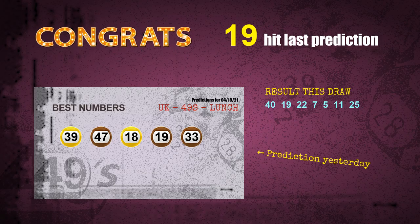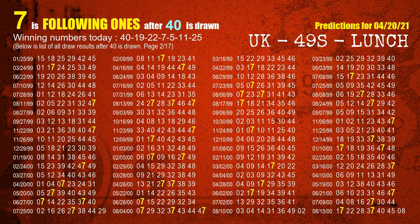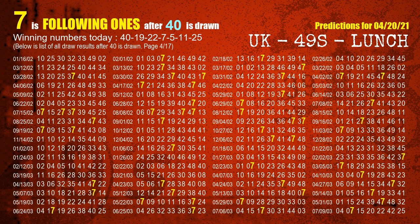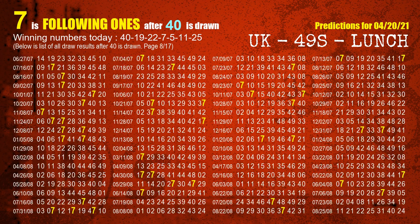First, we'll find out the following ones through today's result. Following numbers refer to those numbers being picked on the next draw after this one, and following ones are the units digit of those following numbers. The first winning number is 40. We list all draw results after a draw with 40 as a winning number. The most frequently following units digit is 7 when 40 is the winning number in the last draw. We already highlight the units digit 7 in yellow for you.